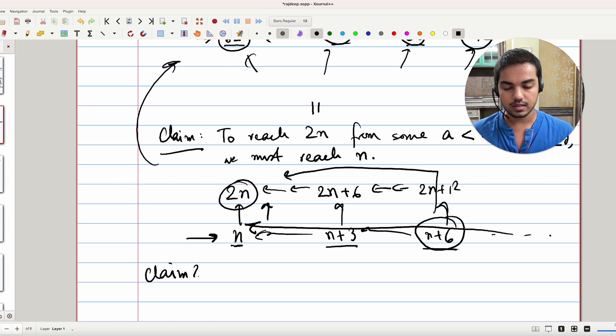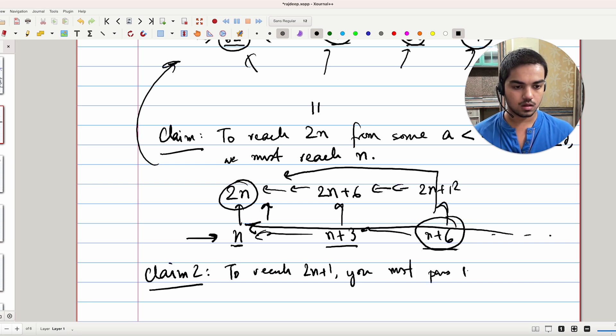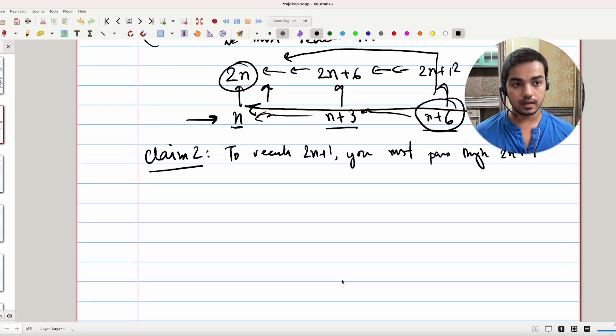Claim 2, which is significantly easier, is that to reach 2n plus 1, we must pass through 2n plus 4, because you can't reach 2n plus 1 any other route. You have to come down from an even number. You can't double your way to 2n plus 1. And this gives us a clear algorithm on how to reach 2n plus 1 from a less than 2n plus 1. This all works only if you're trying to go from bottom to up.